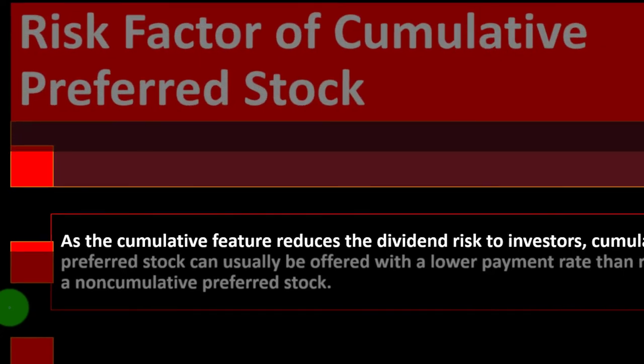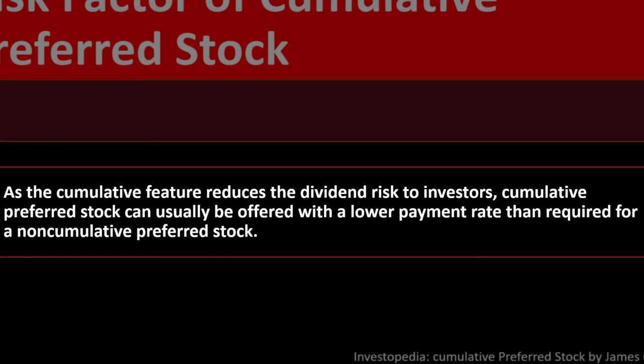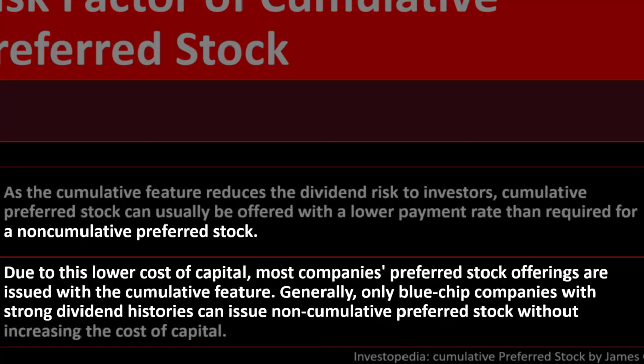Regarding risk: because the cumulative feature reduces dividend risk to investors, cumulative preferred stock can usually be offered with a lower payment rate than non-cumulative preferred stock. Due to this lower cost of capital, most preferred stock offerings are issued with the cumulative feature. Generally, only blue chip companies with strong dividend histories can issue non-cumulative preferred stock without increasing their cost of capital.